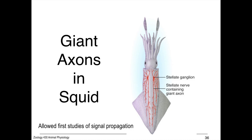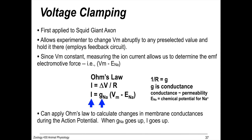These were figured out in experiments on giant axons in squid. Invertebrates do not have myelinated neurons, so their neurons are gigantic. These allowed for the first studies of signal propagation.